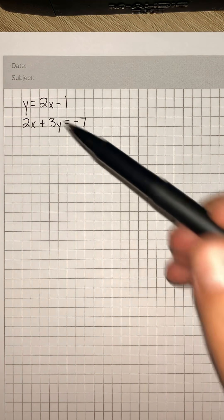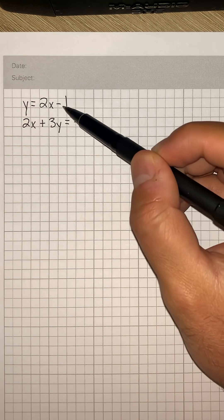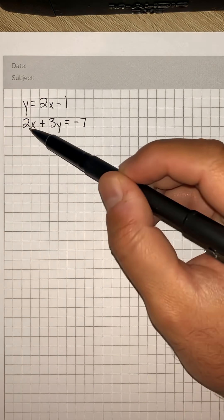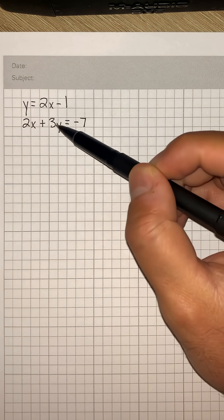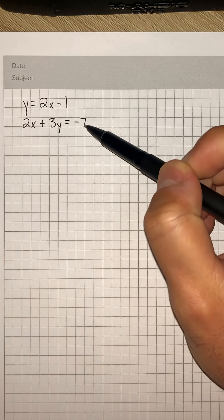So we have a system of equations: y equals 2x minus 1, and 2x plus 3y equals negative 7.